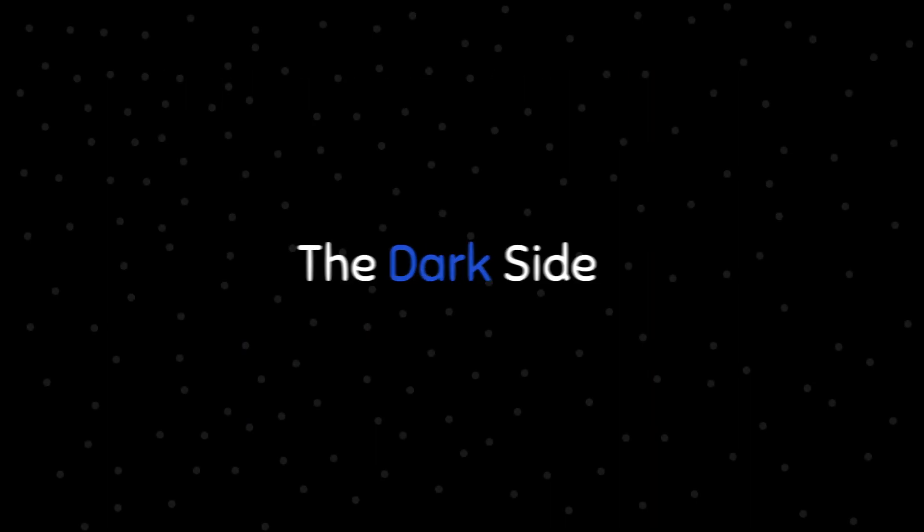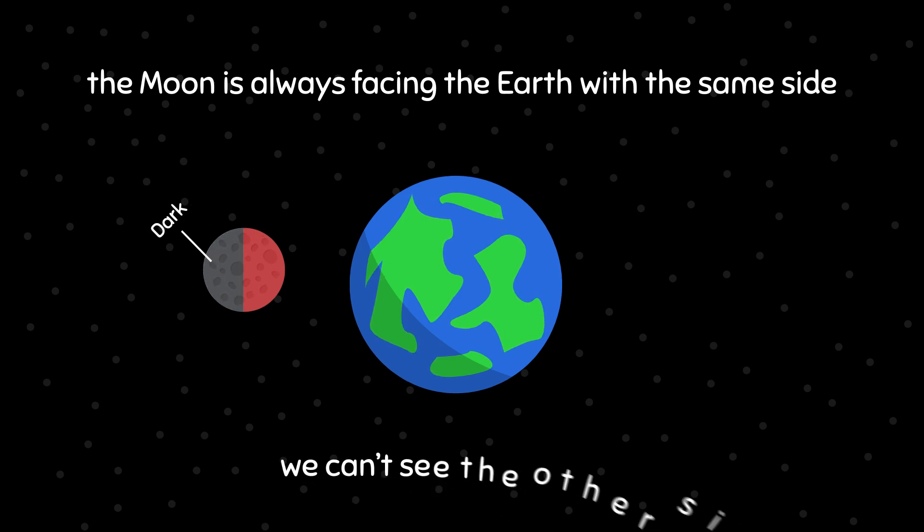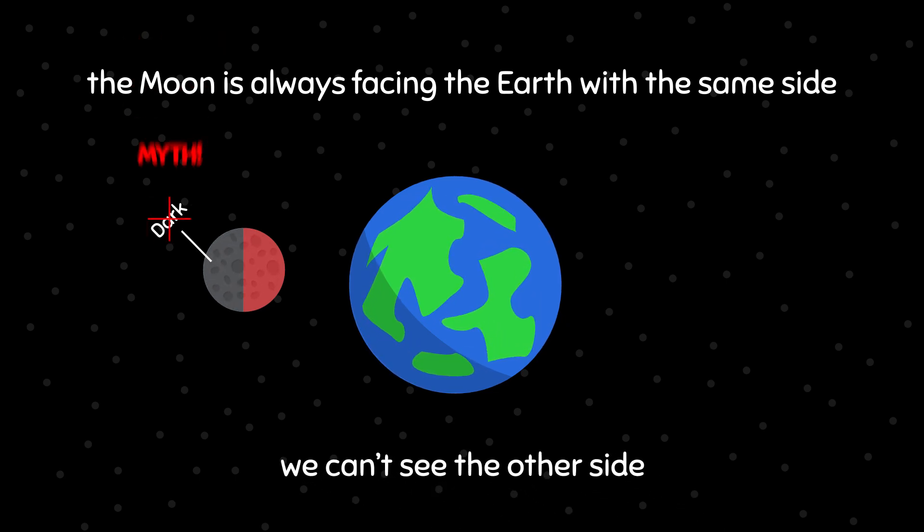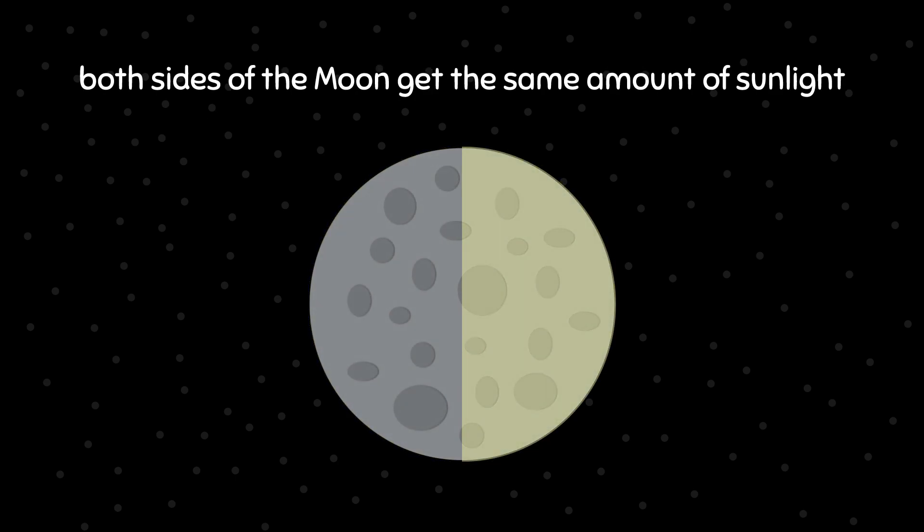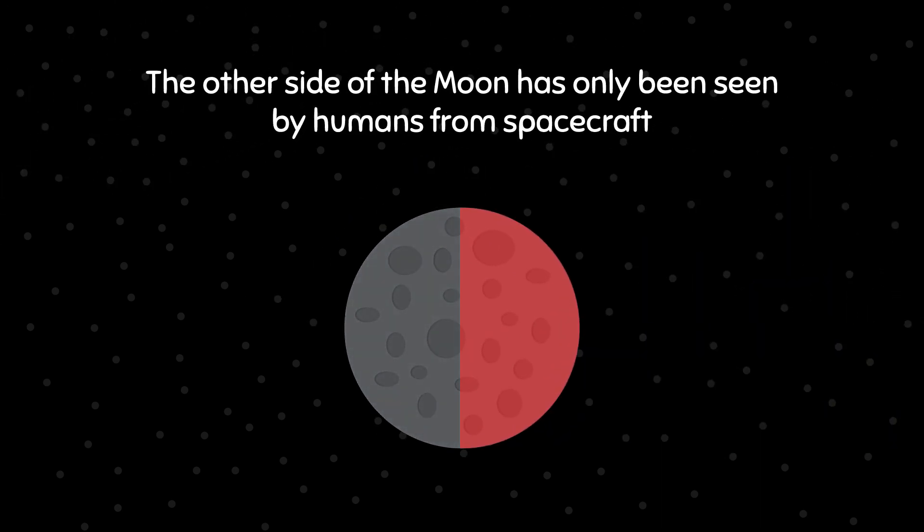The dark side. As we said before, the Moon is always facing the Earth with the same side. However, the dark side, the side of the Moon we can't see, is a myth. In reality, both sides of the Moon get the same amount of sunlight. However, the Moon rotates around its own axis in exactly the same time it takes to orbit the Earth, meaning the same side is always facing the Earth. The other side of the Moon has only been seen by humans from spacecraft.